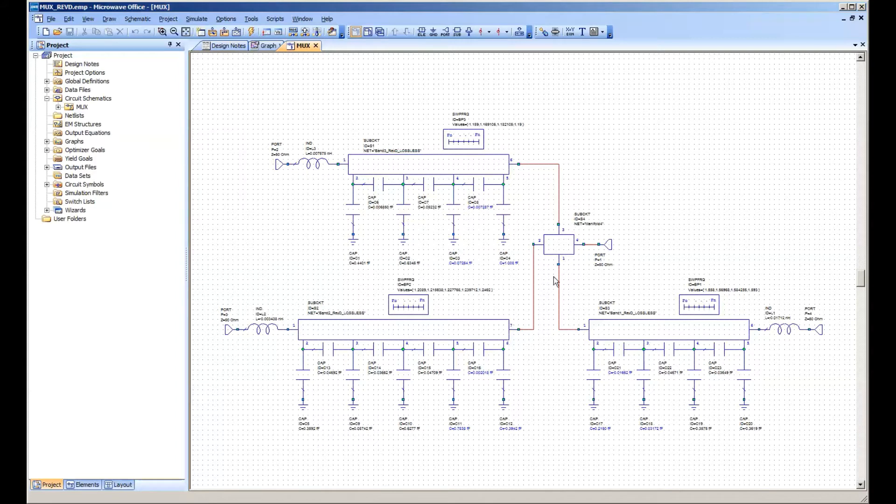And then this S-parameter block is from my 3D EM simulation of the manifold that's joining all those together. So we can work on equivalent circuits, or in this case we're port tuning EM simulation results. So this is an example of putting everything on one schematic.